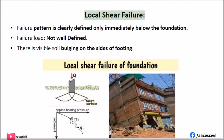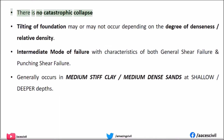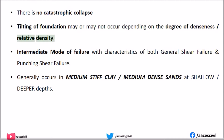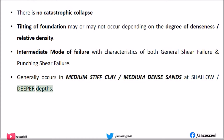Local Shear Failure: The failure pattern is clearly defined only immediately below the foundation. The failure load is not well defined. There is visible soil bulging on the sides of the footing, but there is no catastrophic collapse. Tilting of the foundation may or may not occur depending on the relative density. This is an intermediate mode of failure with characteristics of both general shear failure and punching shear failure. Generally occurs in medium-stiff clay and medium-dense sands at shallow or deeper depths.